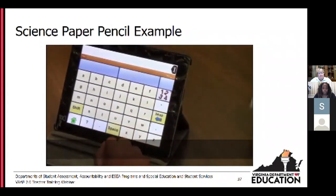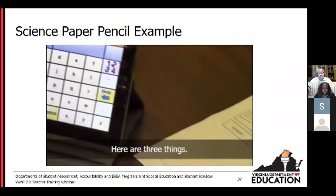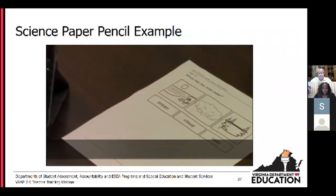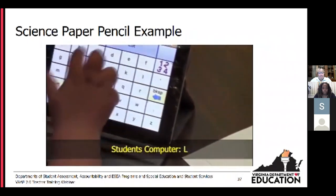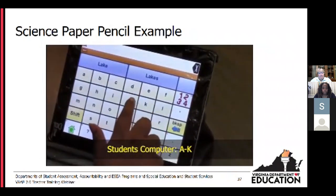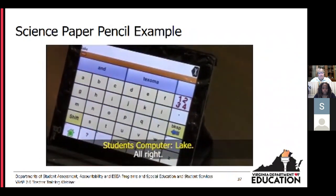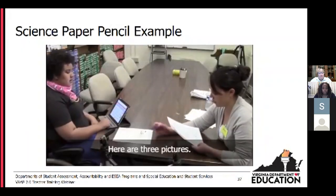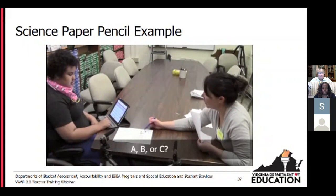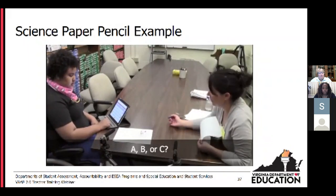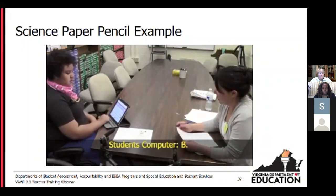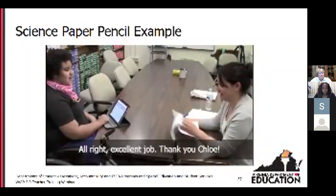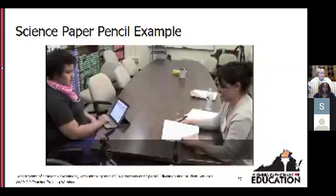[Video demo - Science continued] 'Here are three things. Which has the most water — ocean, cloud, or lake?' Student attempts to spell the answer. Next: 'Here are three pictures. Which pollutes the earth — A, B, or C?' Student: 'B.' Examiner: 'Excellent job. Thank you, Chloe.'